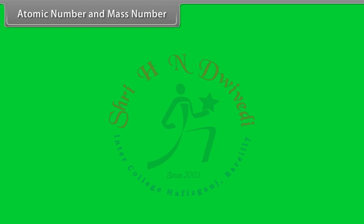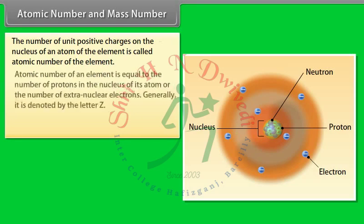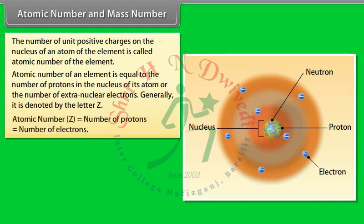Atomic number and mass number: The number of unit positive charges on the nucleus of an atom of an element is called the atomic number of the element. Atomic number is equal to the number of protons in the nucleus or the number of extranuclear electrons. It is generally denoted by the letter Z. Atomic number Z = number of protons = number of electrons.